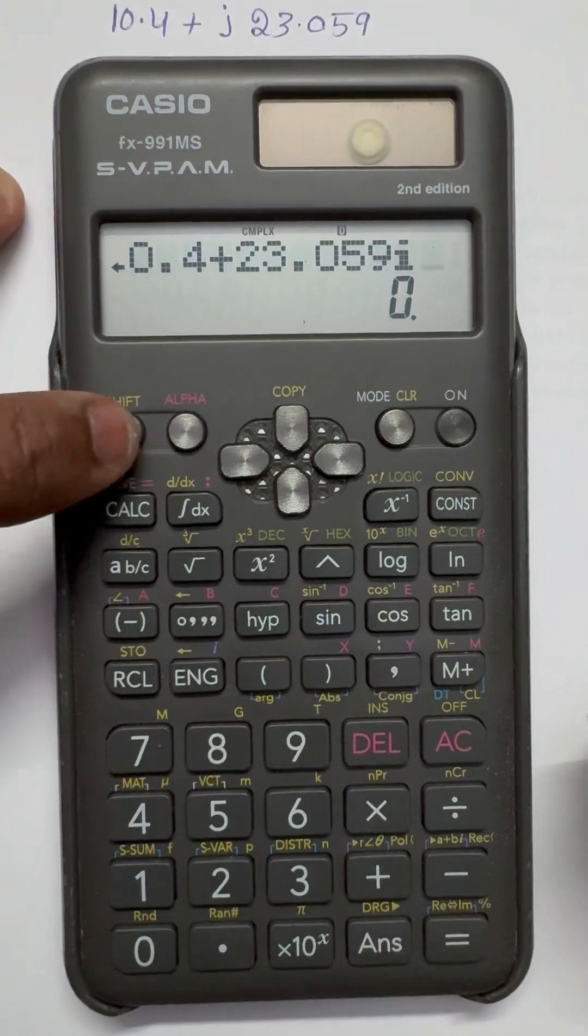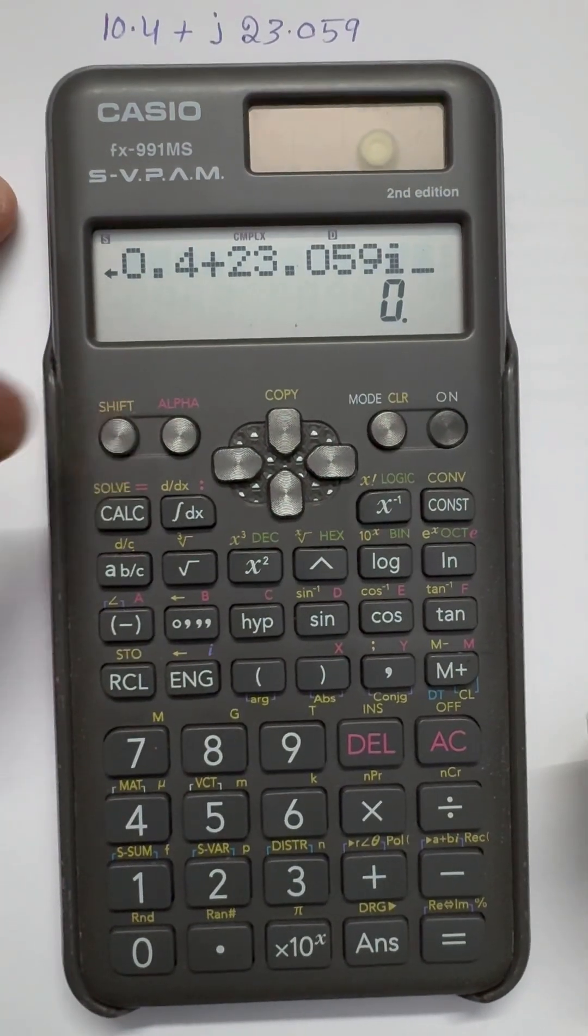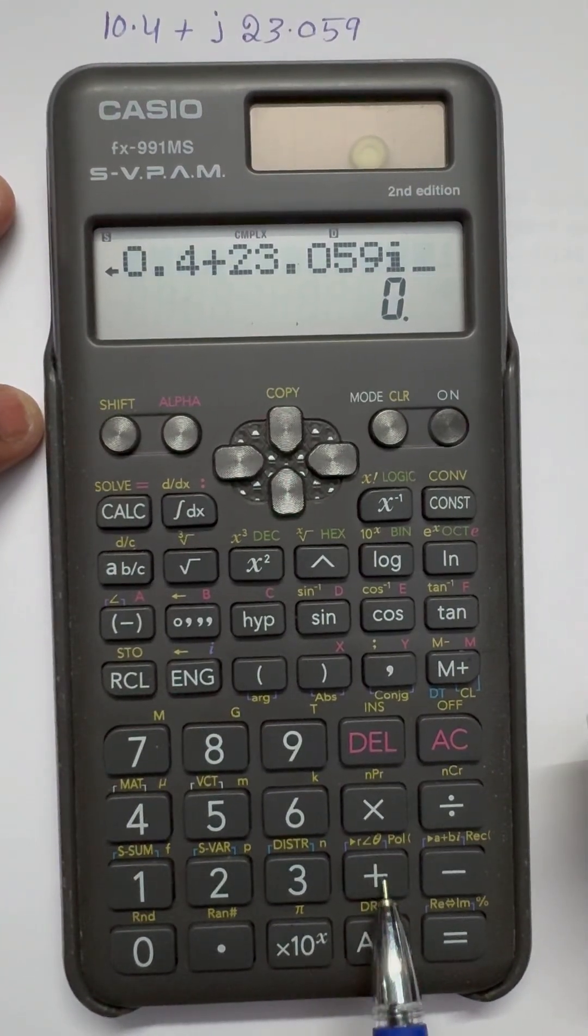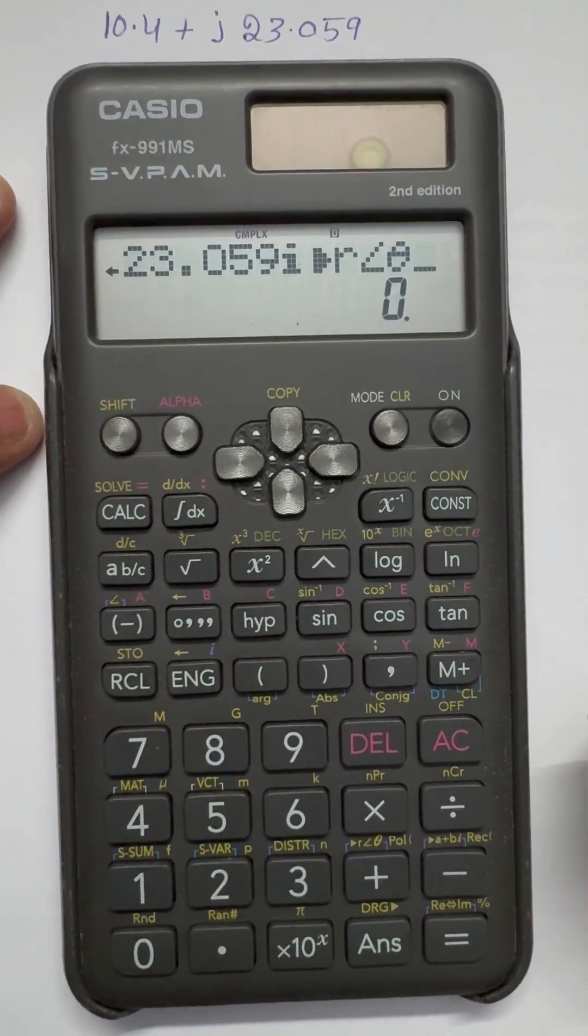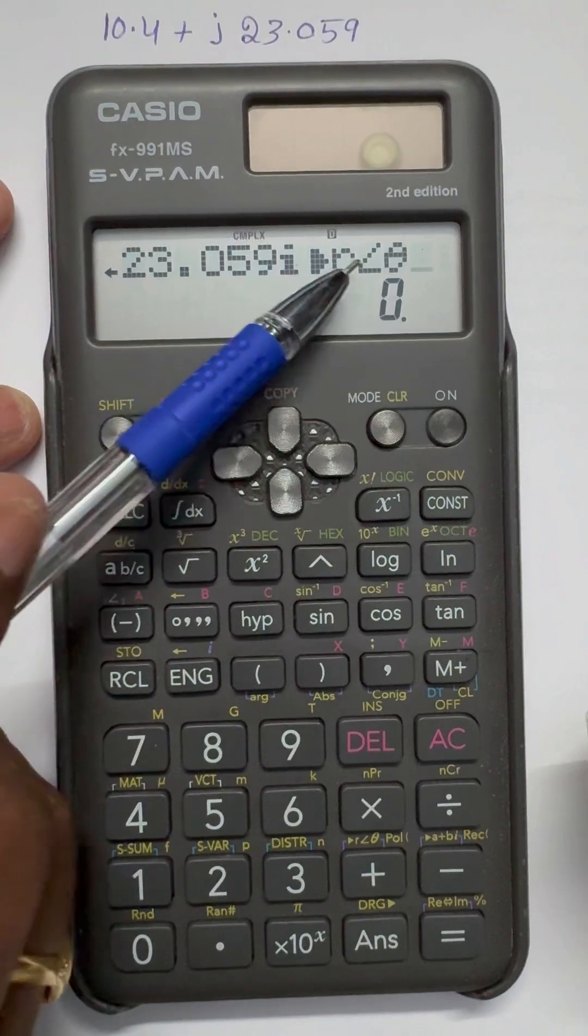To get that, press shift button. Now press shift and press this plus button. Now look at here, it will show us r at an angle of θ.